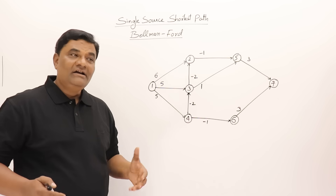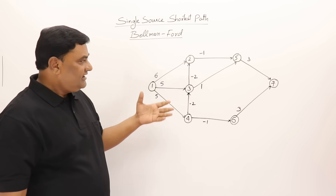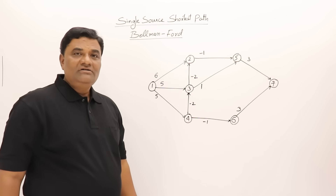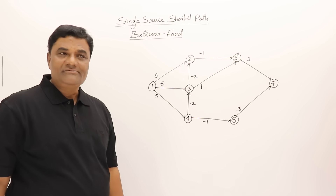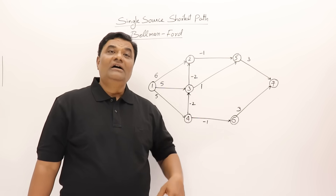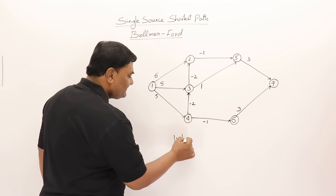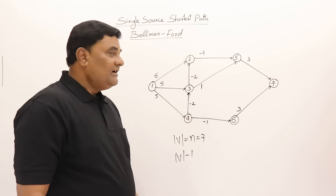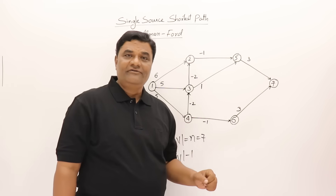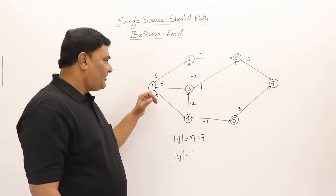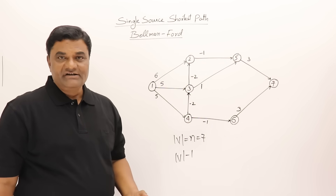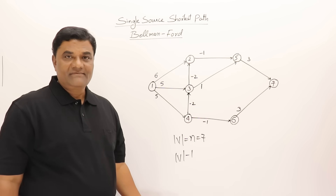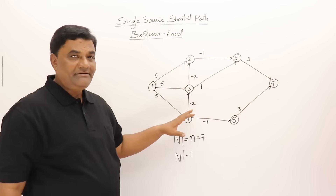Dynamic programming says: try out all possible solutions and pick the best one. This algorithm does that by repeatedly relaxing all edges. How many times? You relax all edges for n-1 times, where n is the number of vertices. Here we have 7 vertices, so we relax for 6 times. The idea is that the longest possible shortest path from the source can have at most n-1 edges, so relaxing 6 times covers all possible paths.